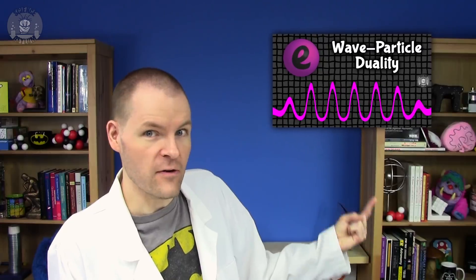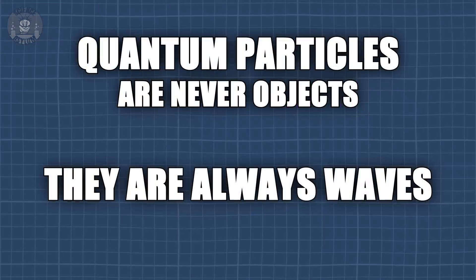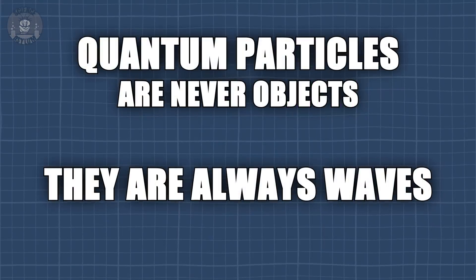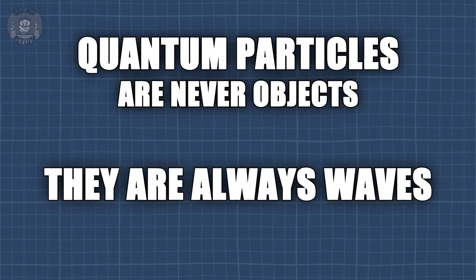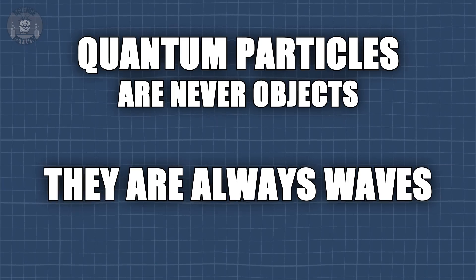We learned something very important: quantum particles are never objects — they are always waves. Specifically, quantum probability waves, which means we need two things: the Heisenberg Uncertainty Principle and the Pauli Exclusion Principle.